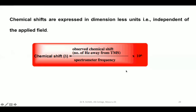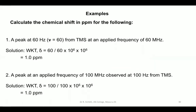Let us take some examples to calculate chemical shift in PPM. First example: a peak at 60 Hz away from TMS at an applied frequency of 60 MHz. Delta equals 60 divided by (60 × 10⁶) multiplied by 10⁶. The 10⁶ terms cancel, giving 60/60 = 1 PPM. So the peak appears at a chemical shift of 1 PPM.